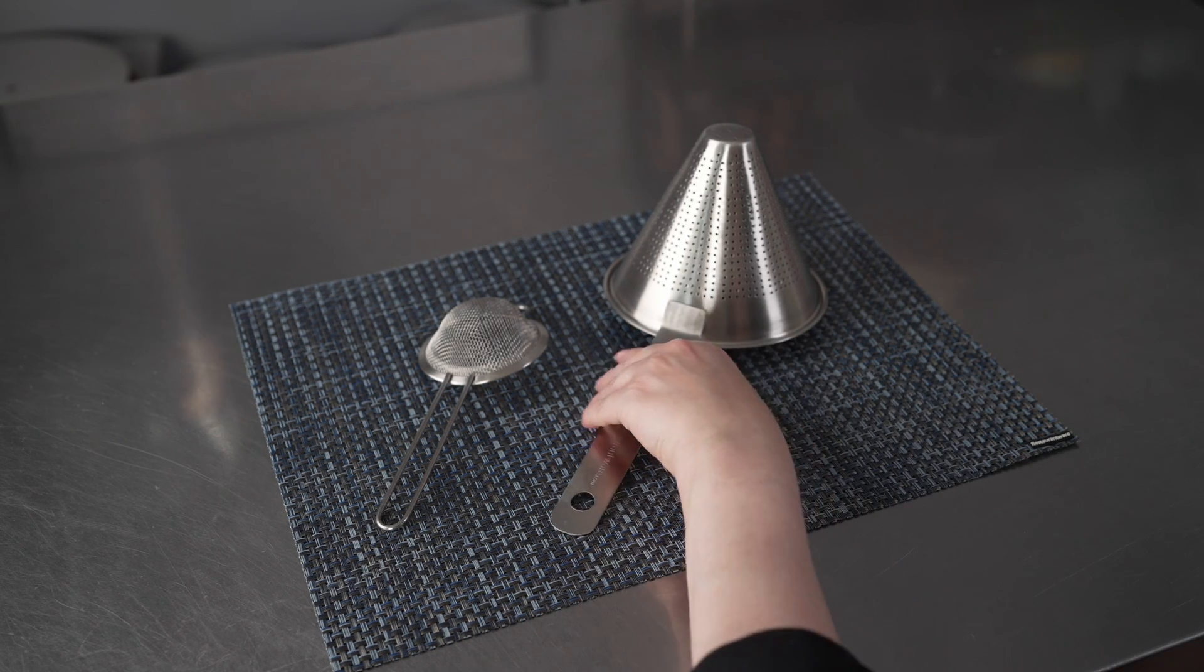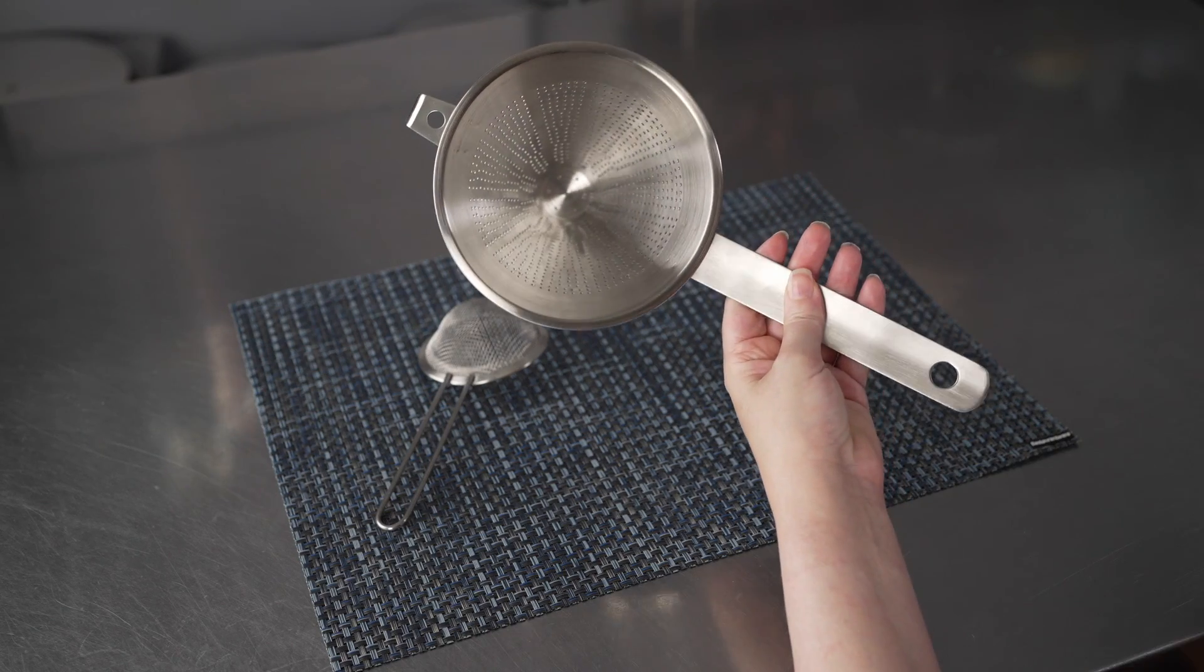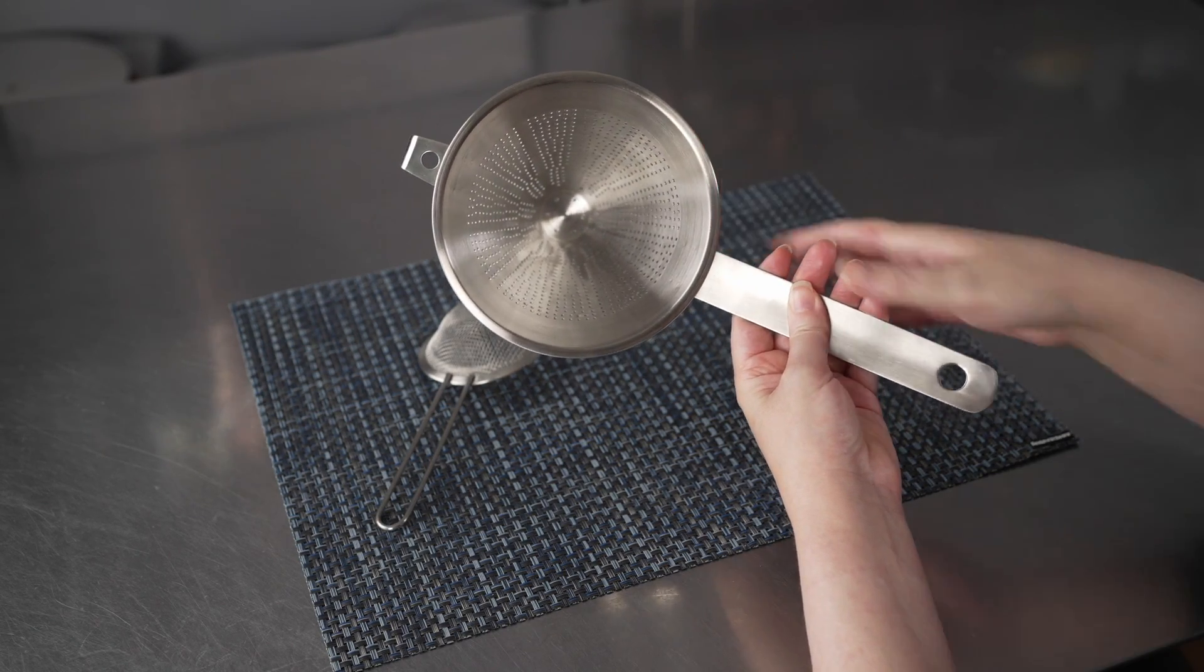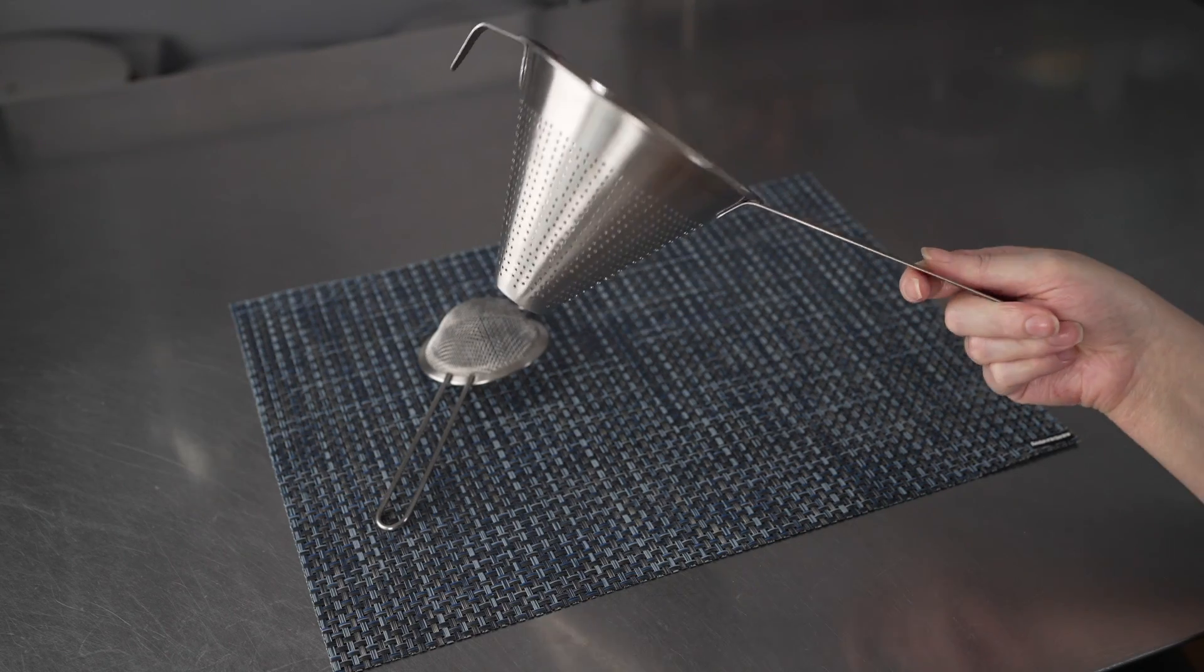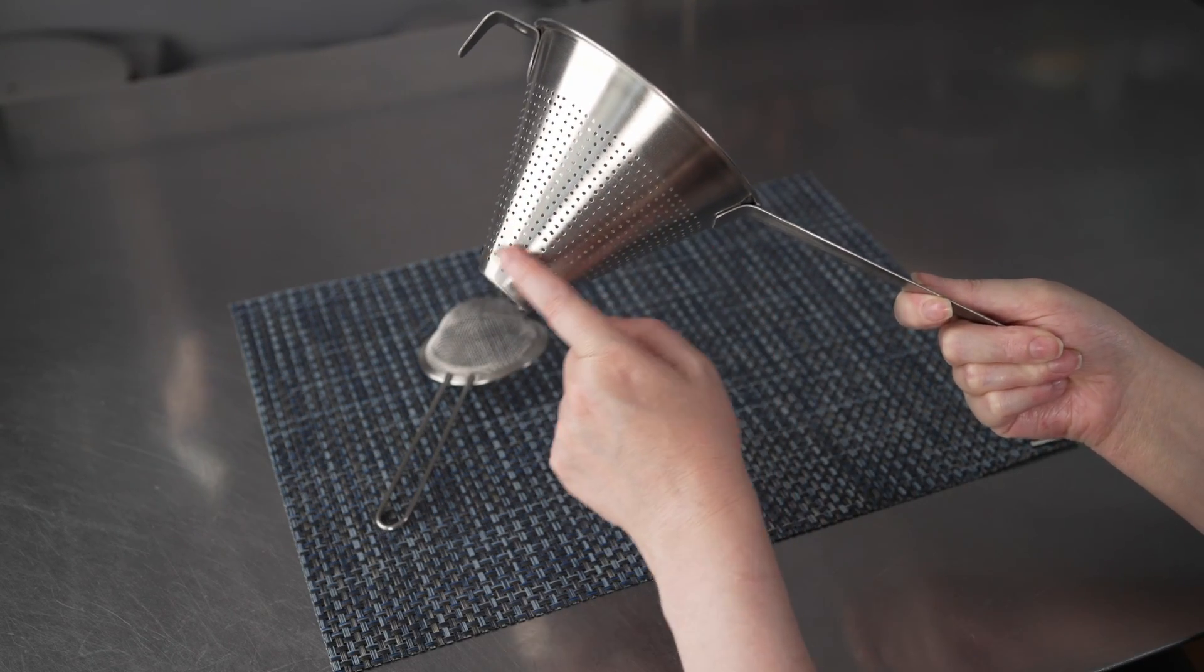The china caps are perfect for catching seeds or solid particles in thicker liquids. And you can see it's got that nice large cone shape and those larger holes on it.